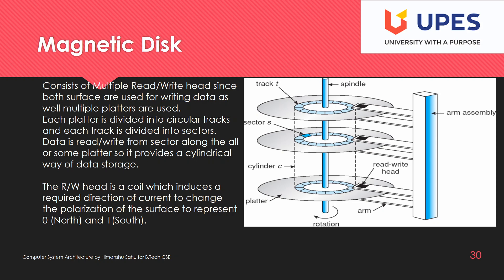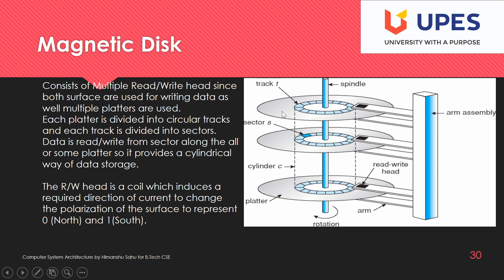A magnetic disk is a collection of platters — perhaps three to five. Per platter, we have two read/write heads, one above and one below, since both surfaces have magnetic material. We can read or write on both surfaces. Each platter is divided into tracks — circular sections — and each track is divided into sectors. Data is read or written in the form of sectors.